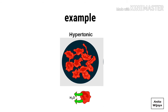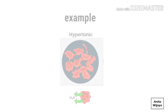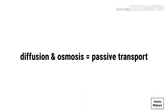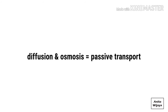Red blood cell is the area with higher concentration, we call it hypertonic area, so the solution in red blood cell overflows to the water. Both osmosis and diffusion are passive transport, which means they do not need energy for transportation.